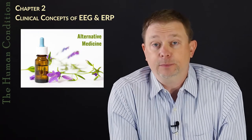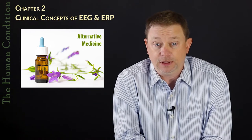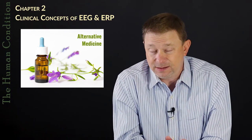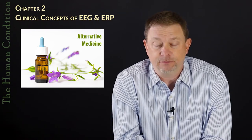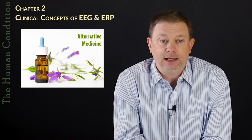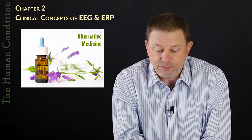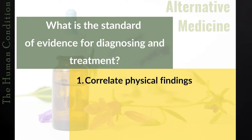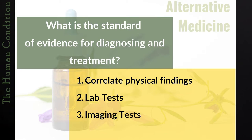Complementary and alternative medicine and functional medicine are not free of the obligation of evidence and science and standards. We can't hold them to exactly the same standards, however, because the expense of proving causation for every medical condition is not possible — economically it would bankrupt every country. So what we have to do is ask ourselves: what is the standard of evidence for diagnosing and treating a patient when a patient presents with a symptom? One of the first things is we have to correlate physical findings — objective findings the doctor would examine and find on the patient's body — lab tests, imaging tests, and the history.